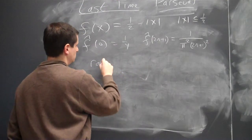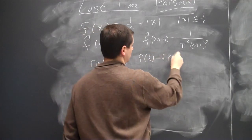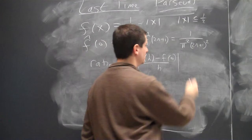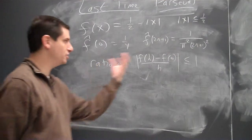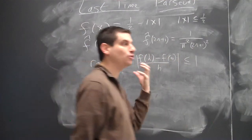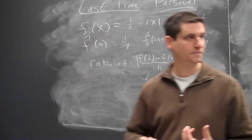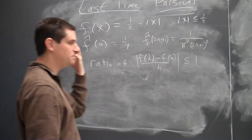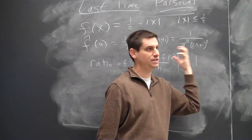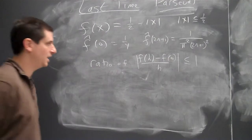So here, the ratio of f of h minus f of zero over h, this is less than equal to one. And really, that's all we need for Dirichlet's theorem. This is the Lipschitz of exponent one condition. I don't need the full strength of differentiability. I just need the fact that this quotient is bounded. And then you can run through the Dirichlet argument and the Dirichlet machinery. So the proof of Dirichlet is in the notes. It gives us pointwise convergence.